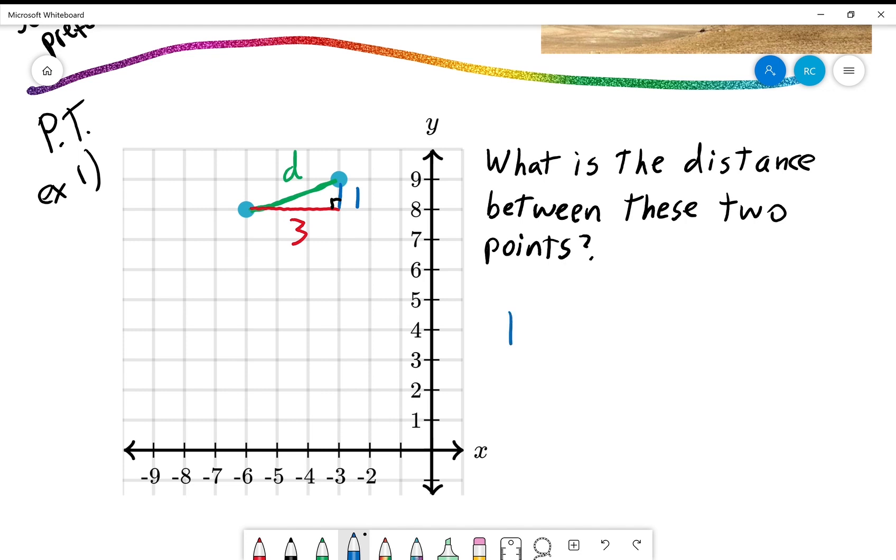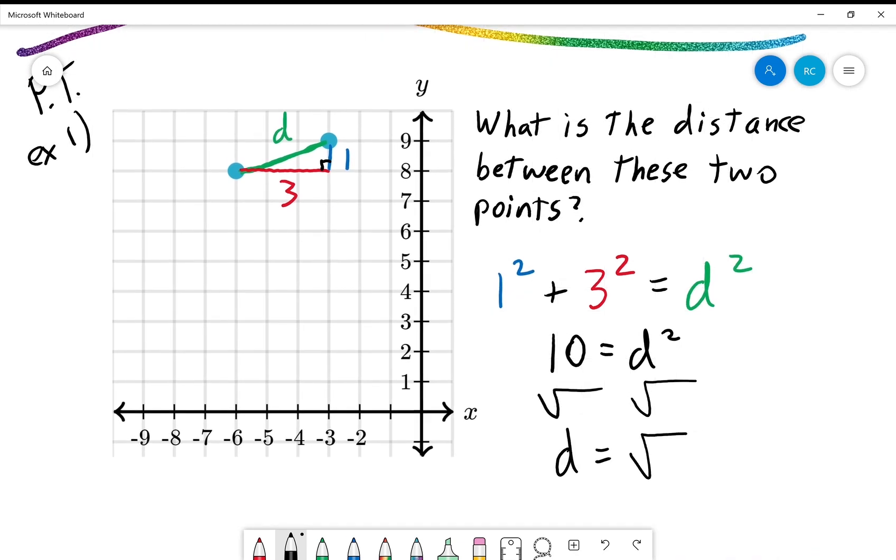And now that we've turned this into a right triangle, we can apply the Pythagorean theorem. So we're going to say that one squared plus three squared must equal d squared. Well, let's see. One squared is one. Three squared is nine. One plus nine is 10, which is d squared. And remember to undo a squared, we square root both sides. So it looks like d is the square root of 10. Let's see. Is there any way that we can simplify that? 10 is two times five. Nope. Does not look like we can simplify that. So we're just going to leave it as the square root of 10.